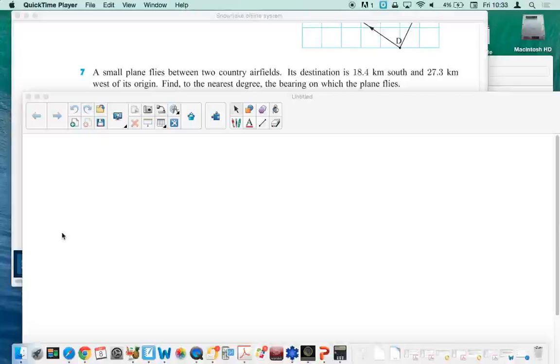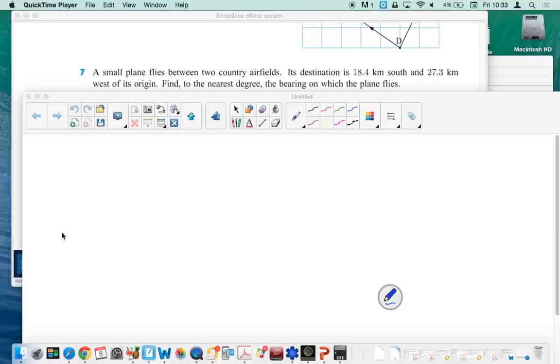This is a classic three-figure bearing problem in trigonometry, and if you're doing it in trigonometry it means you're going to set up a right angle triangle somewhere. Let's see - plane flies between two country airfields, its destination is... we're going to use that piece of information: 18.4 kilometers south and 27.3 kilometers west. A bit of English here of its origin, so you might have to think a bit about what that actually means.